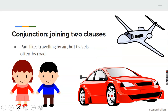Now let's look at a conjunction being used to join two clauses together. A clause is just like a sentence. For example: 'Paul likes travelling by air' — that's one clause — and 'but travels often by road.' The conjunction there is 'but,' which joins them together.